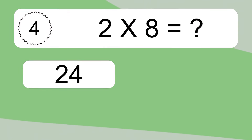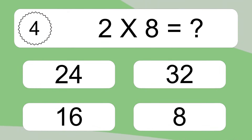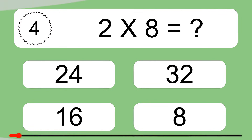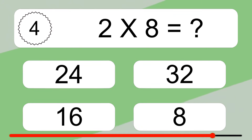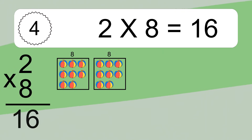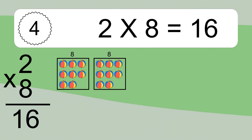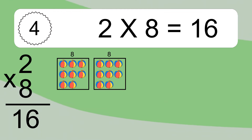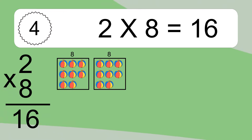2 times 8 equals what? 2 times 8 equals 16. We have 2 boxes, and each box has 8 colorful balls inside. If you count all the balls in all the boxes together, you will have 2 times 8 balls. This equals 16 balls.